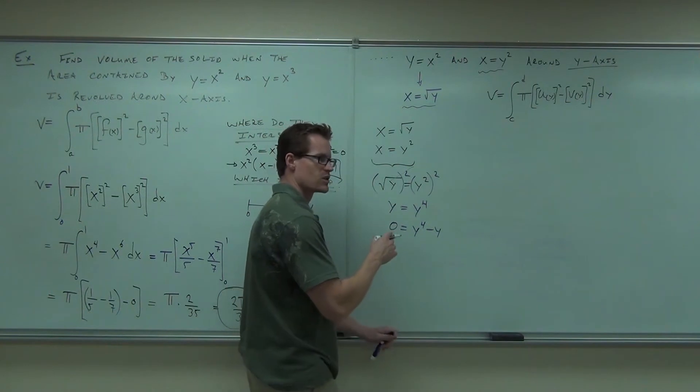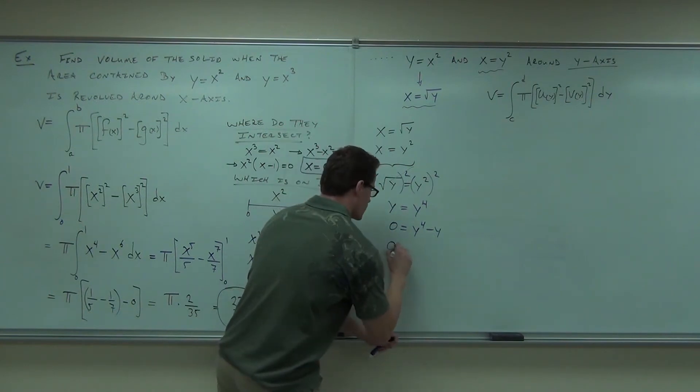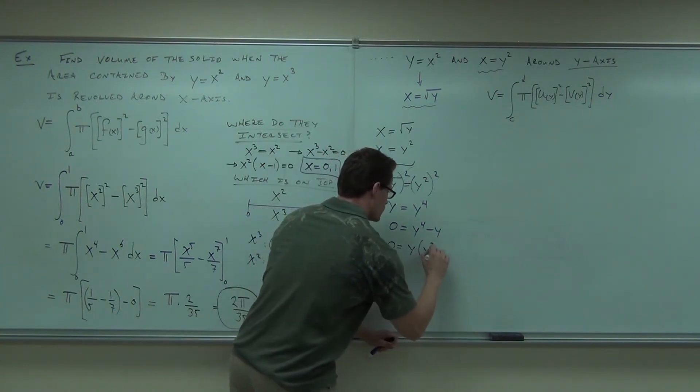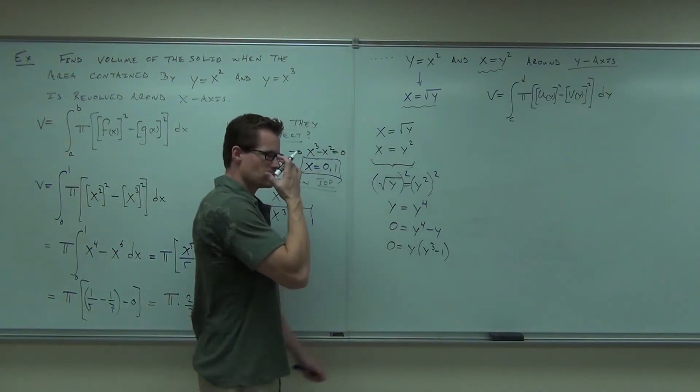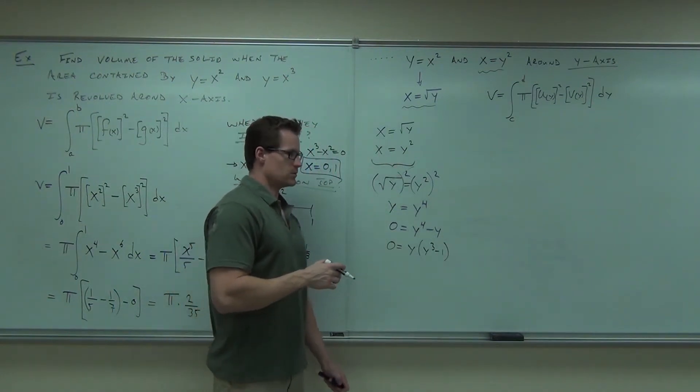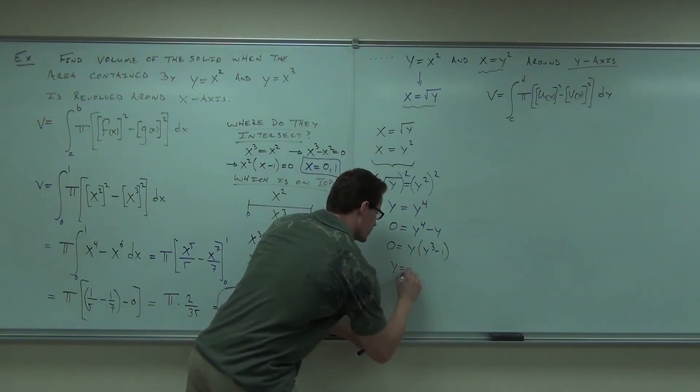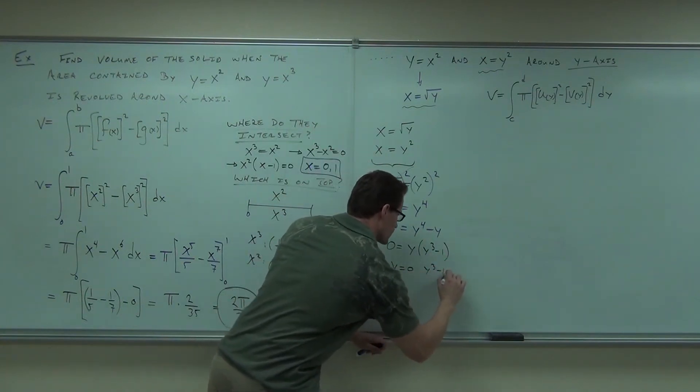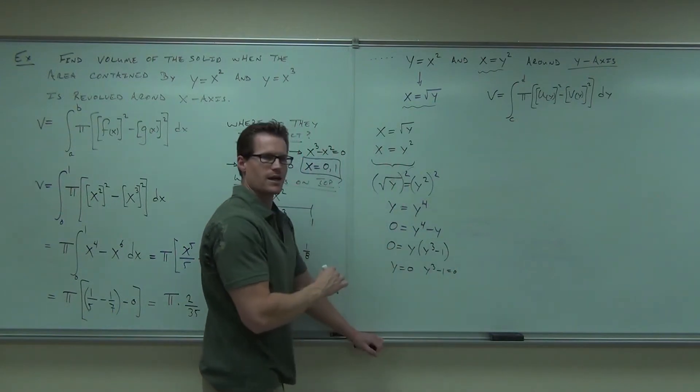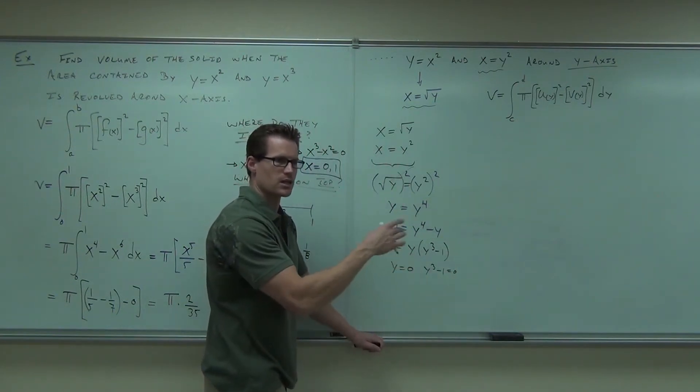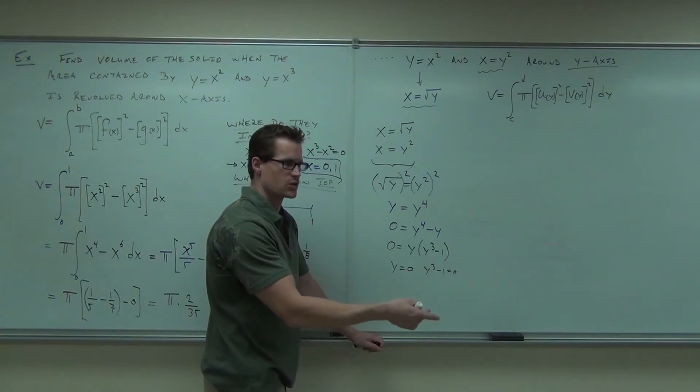We can factor as much as needed. Here, y times y cubed minus one. Now, when you do this problem, you're going to get y equals zero, and y cubed minus one equals zero. Can you solve for y? Yes. Yes, you can. And add one and take a cube root, and you're going to get still one.